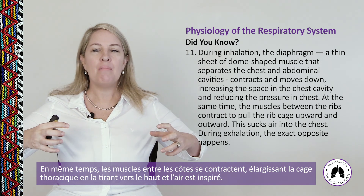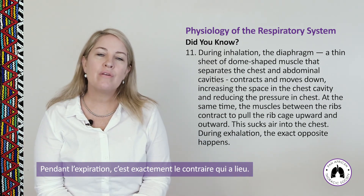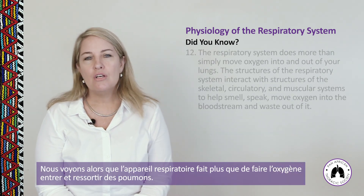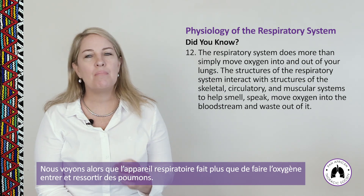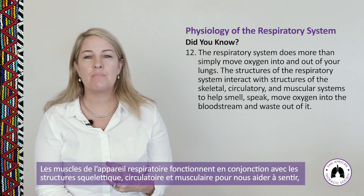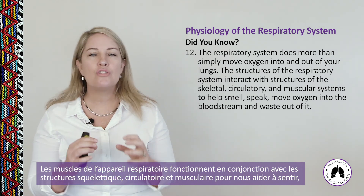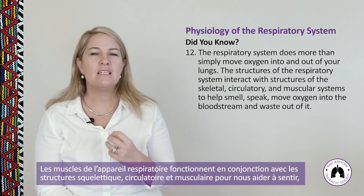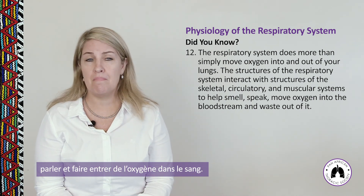At the same time, the muscles between the ribs contract, pulling the rib cage upwards and outwards, and air is sucked into the chest. During exhalation, the exact opposite occurs. The respiratory system does more than simply move oxygen into and out of our lungs — it interacts with the structures of the skeletal, circulatory, and muscular systems to help us smell, speak, and move oxygen into and out of the bloodstream.